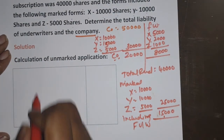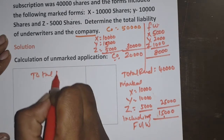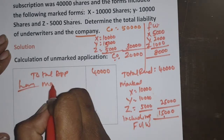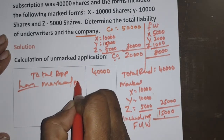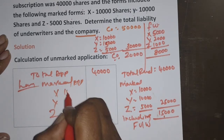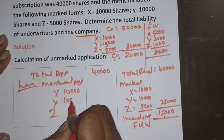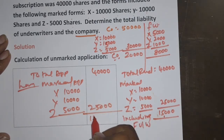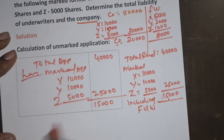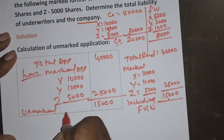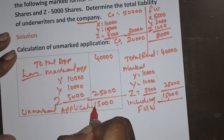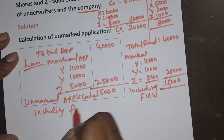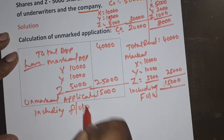Calculation of unmarked application: total applications received 40,000 less marked applications — X: 10,000, Y: 10,000, Z: 5,000, total 25,000 — therefore remaining 15,000. This 15,000 is the unmarked application. When nothing is given, it means it is including firm underwriting.